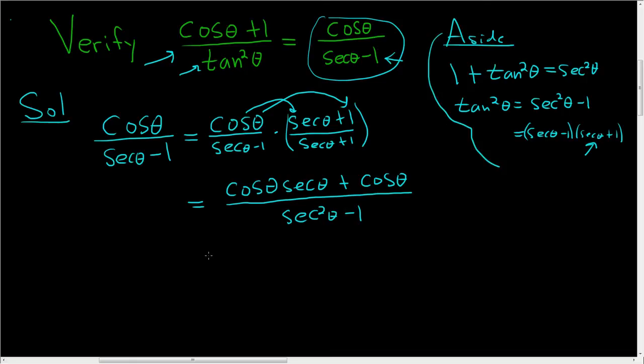This is equal to cosine theta times 1 over cosine theta, right? Secant theta is 1 over cosine theta, plus cosine theta, all divided by, and we know secant squared minus 1, that's tangent squared.